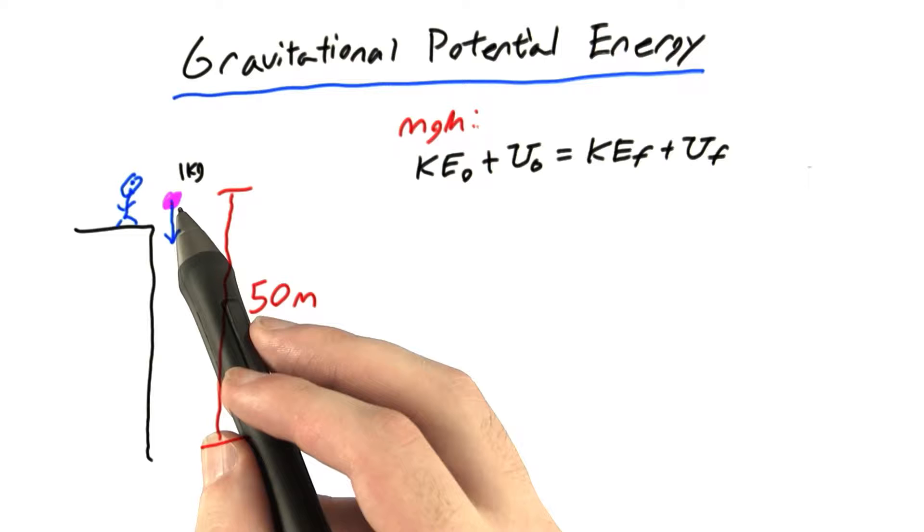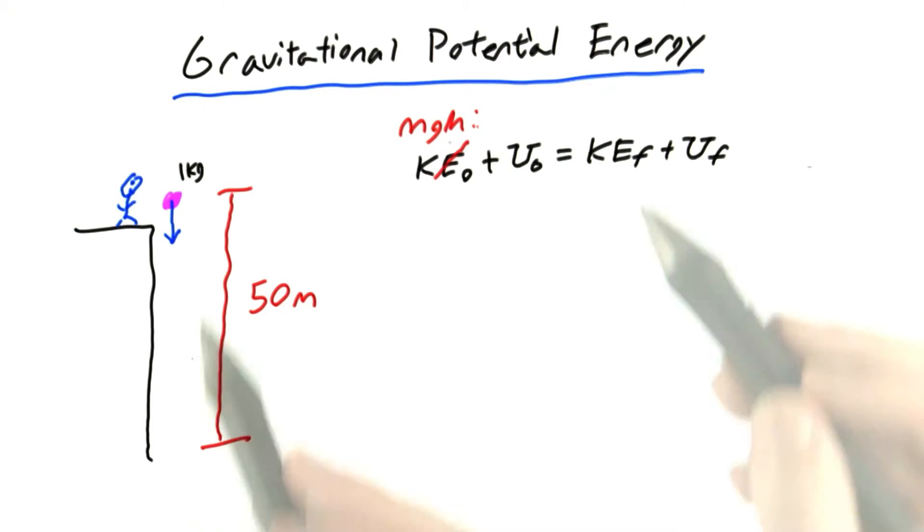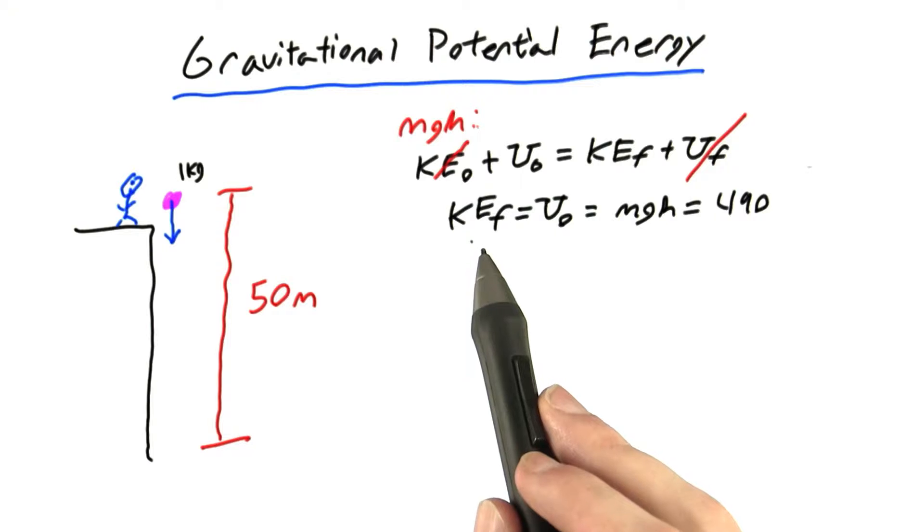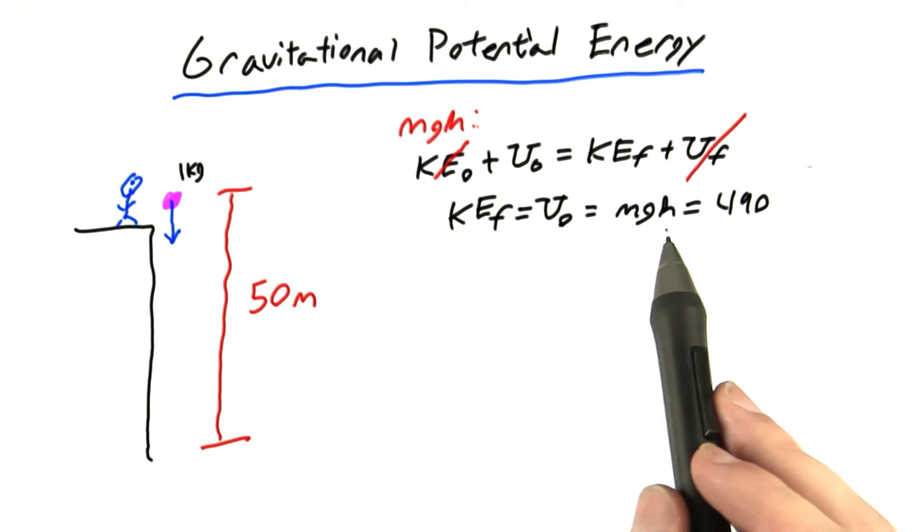Now we know that the ball starts off with no initial velocity, so we can say that the initial kinetic energy is 0, and we know that the ball lands on the ground at height 0, so the final potential energy is also 0. So this gives us that the final kinetic energy is just equal to the original potential energy, which is equal to MGH.